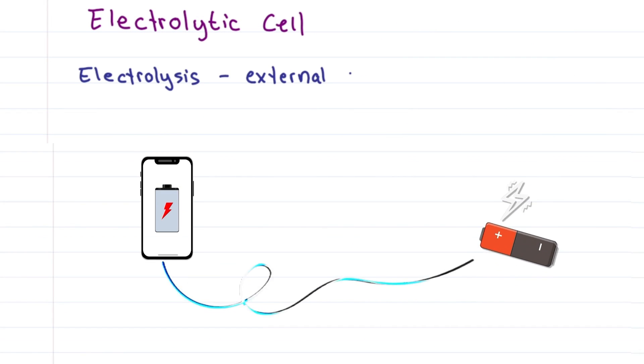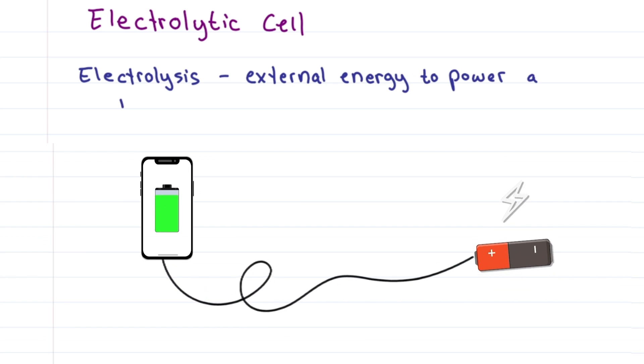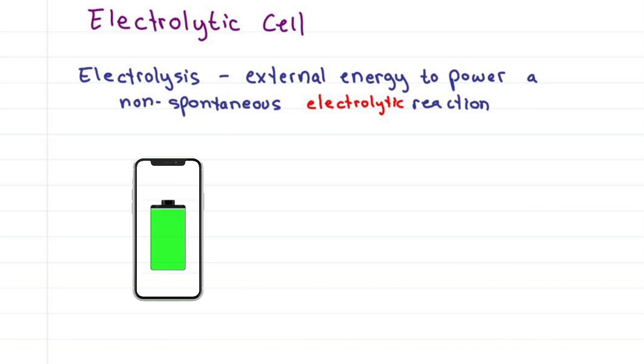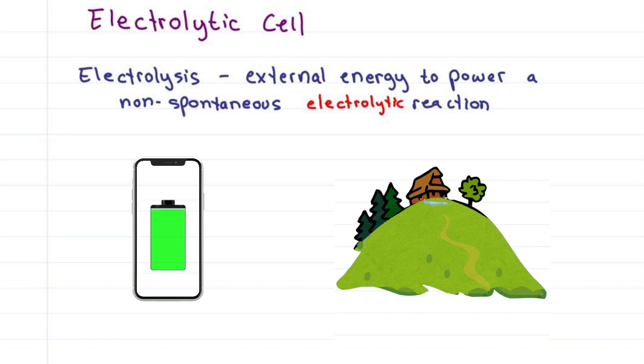Electrolysis uses external energy to power a non-spontaneous electrolytic reaction. Imagine your cell phone battery as water on a hill. As you discharge the battery, water naturally flows down. But if you want to bring the water back up, you have to put in energy to move it up against gravity.